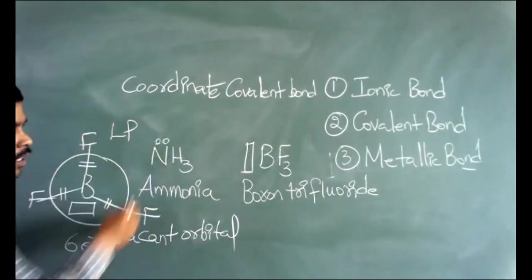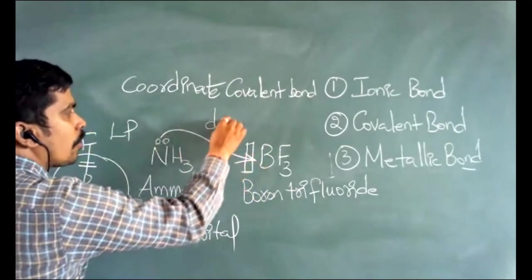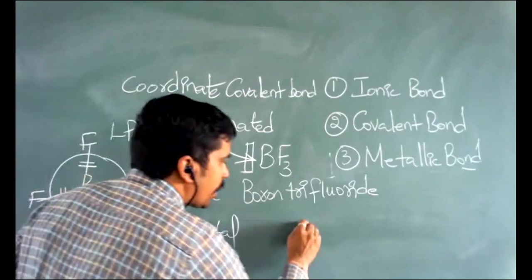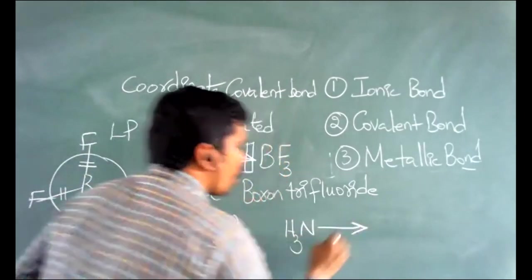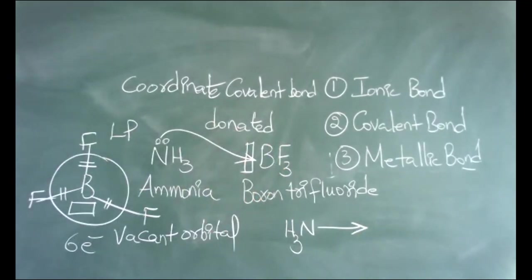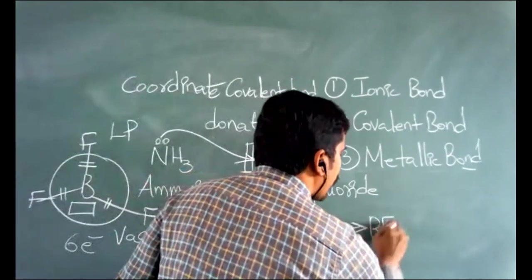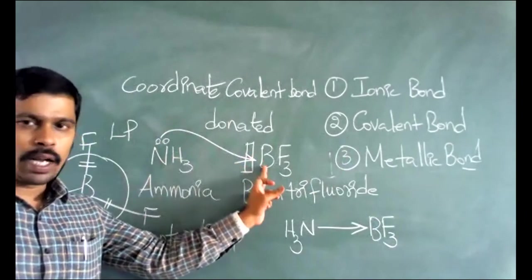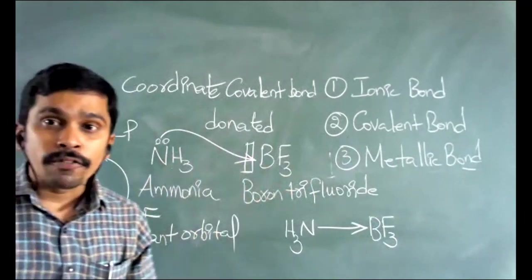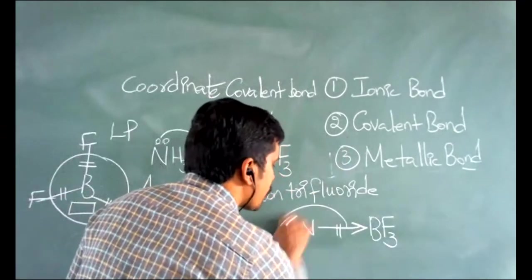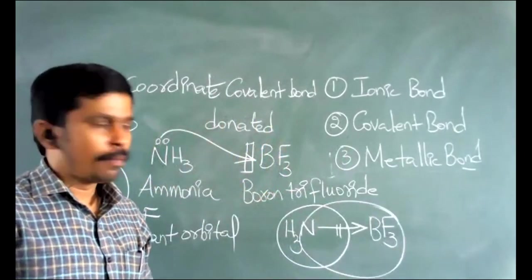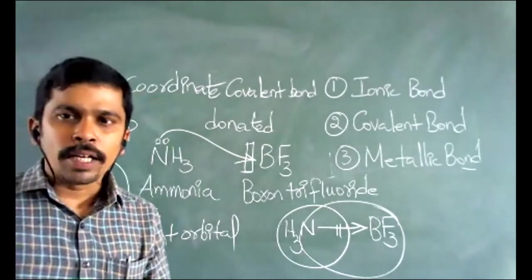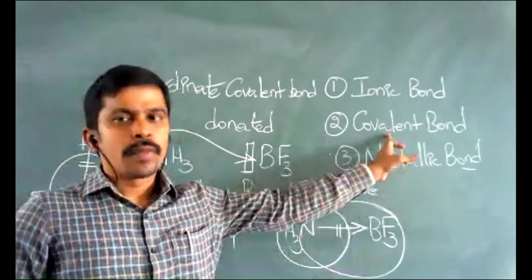This lone pair from ammonia's nitrogen is going to be donated to the vacant orbital of boron in BF3. The arrow mark used to represent this donation is called the coordinate covalent bond. From nitrogen of NH3 to boron of BF3, there is a transfer of lone pair, but that lone pair is mutually shared between the two bonded atoms. That bond is called a coordinate covalent bond — it is a special category of covalent bond.